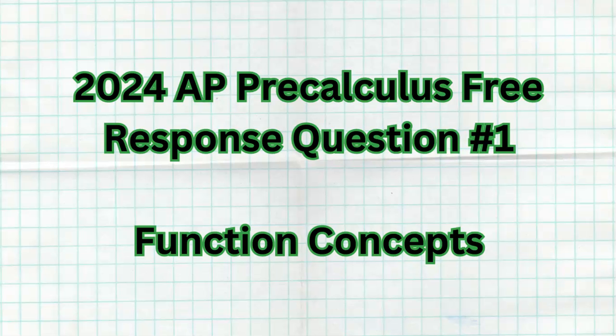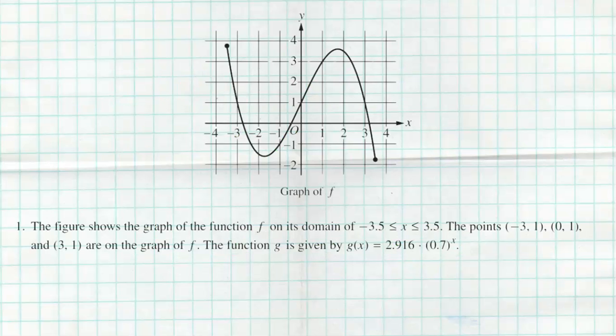I'm going to go over the entire problem, all the solutions, break it all down for you so you can see how you did. The figure shows the graphs of the function f on its domain from negative 3.5 to positive 3.5 inclusive. The points negative 3,1, 0,1, and 3,1 are on the graph of f. The function g is given by g of x equals 2.916 times 0.7 raised to the x.